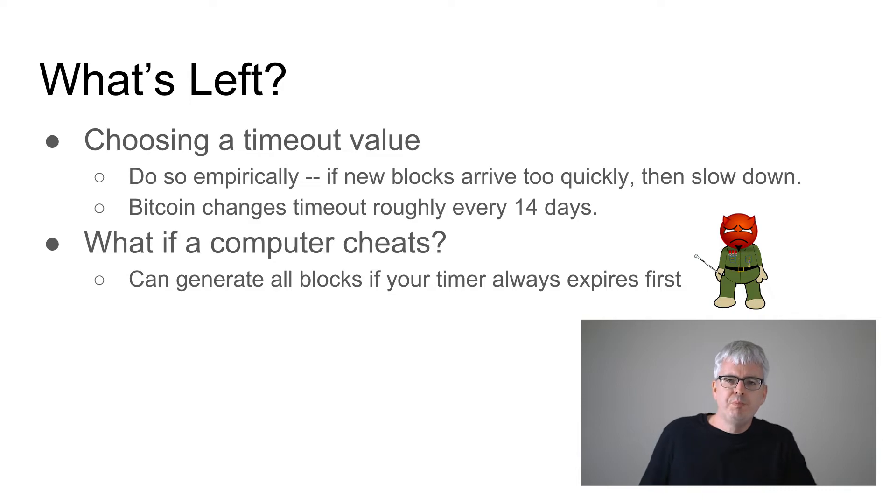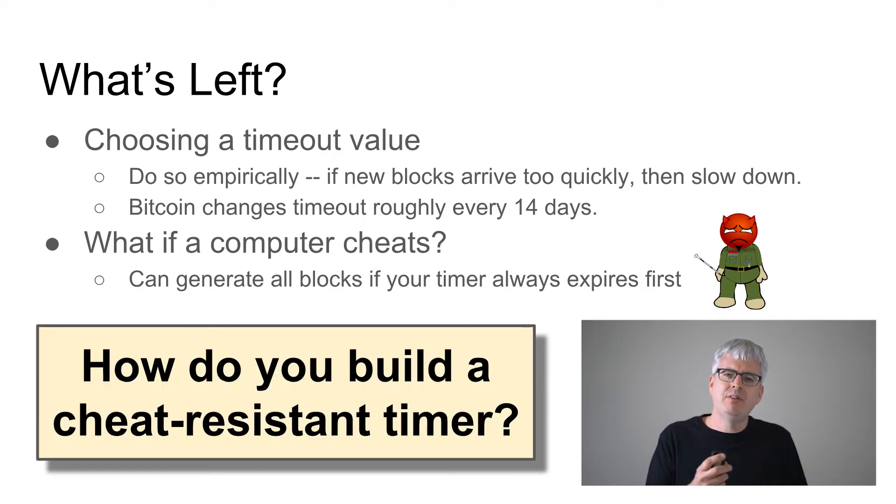But then there's the other question, which is what happens if one of the computers is bad? What if it cheats? We haven't really discussed the bad case, right? And a bad computer in this algorithm could cheat simply by saying, oh, my timer expired, I get to add a block. My timer expired, I get to add a block. My timer expired, I get to add a block. And so if you have your timer expire super fast and you ignore the fact that you're supposed to be waiting longer, you can control the entire blockchain. And that's not a desirable thing in the Bitcoin world, especially since whoever gets to add to the blockchain gets paid money and everyone wants to get paid money, right? The question then becomes, how do you make a timer that is cheat resistant? Can you make a timer such that even a bad node, an evil person cannot make the timer go off before it's time?